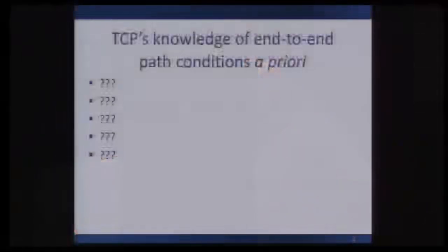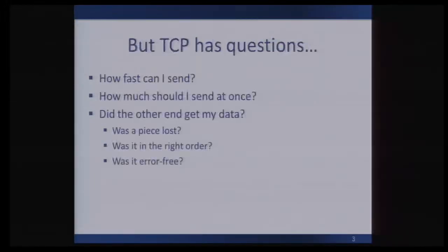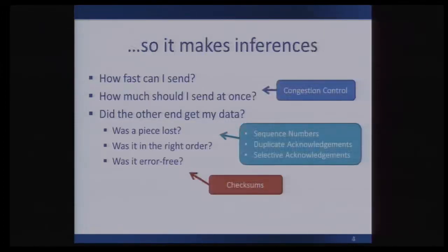Why do we want to do this? Well, it all boils down to how middleboxes interact with TCP. Prior to starting up a new connection, TCP doesn't really know anything about the end-to-end path conditions between itself and the receiver a priori. But during the connection there are questions it needs to answer in order to make the most efficient use of that path — such as: how fast can I send? How much should I send at once? Did the other end get my data? Was it intact? TCP has tools to make inferences during the connection, like sequence numbers, and others added over time as the network evolved, such as congestion control in the 80s.